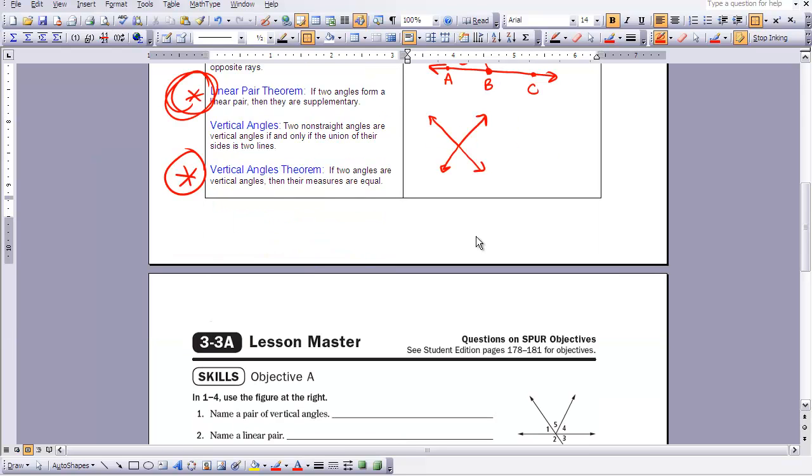The next two things on our list are vertical angles and the vertical angles theorem. And these two pairs are also very, very important in our study of geometry. We'll use the vertical angles theorem as a justification in several of our proofs. But let's first of all talk about what they are, the definition of vertical angles. What it is, two non-straight angles are vertical angles if and only if the union of their sides is two lines. So let's take a look at this.